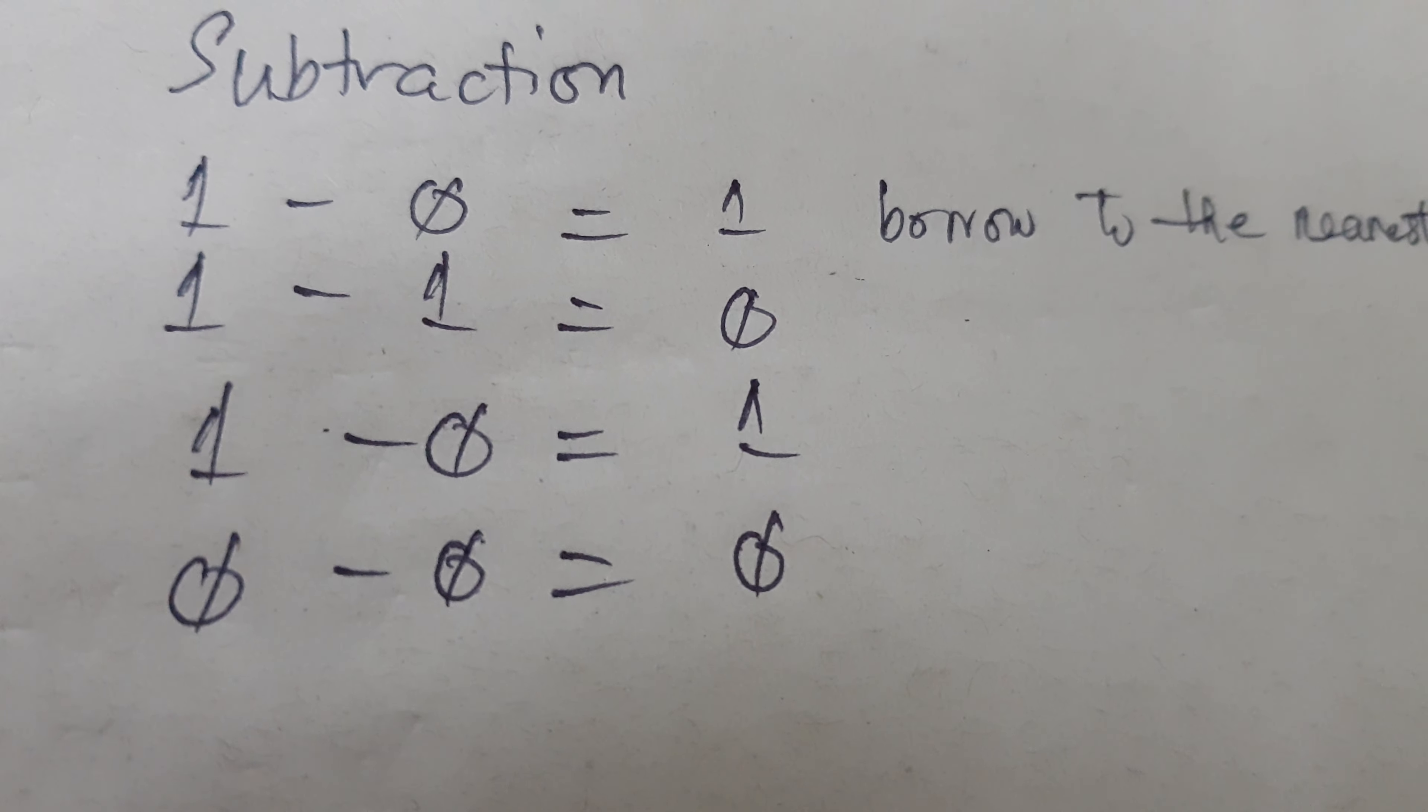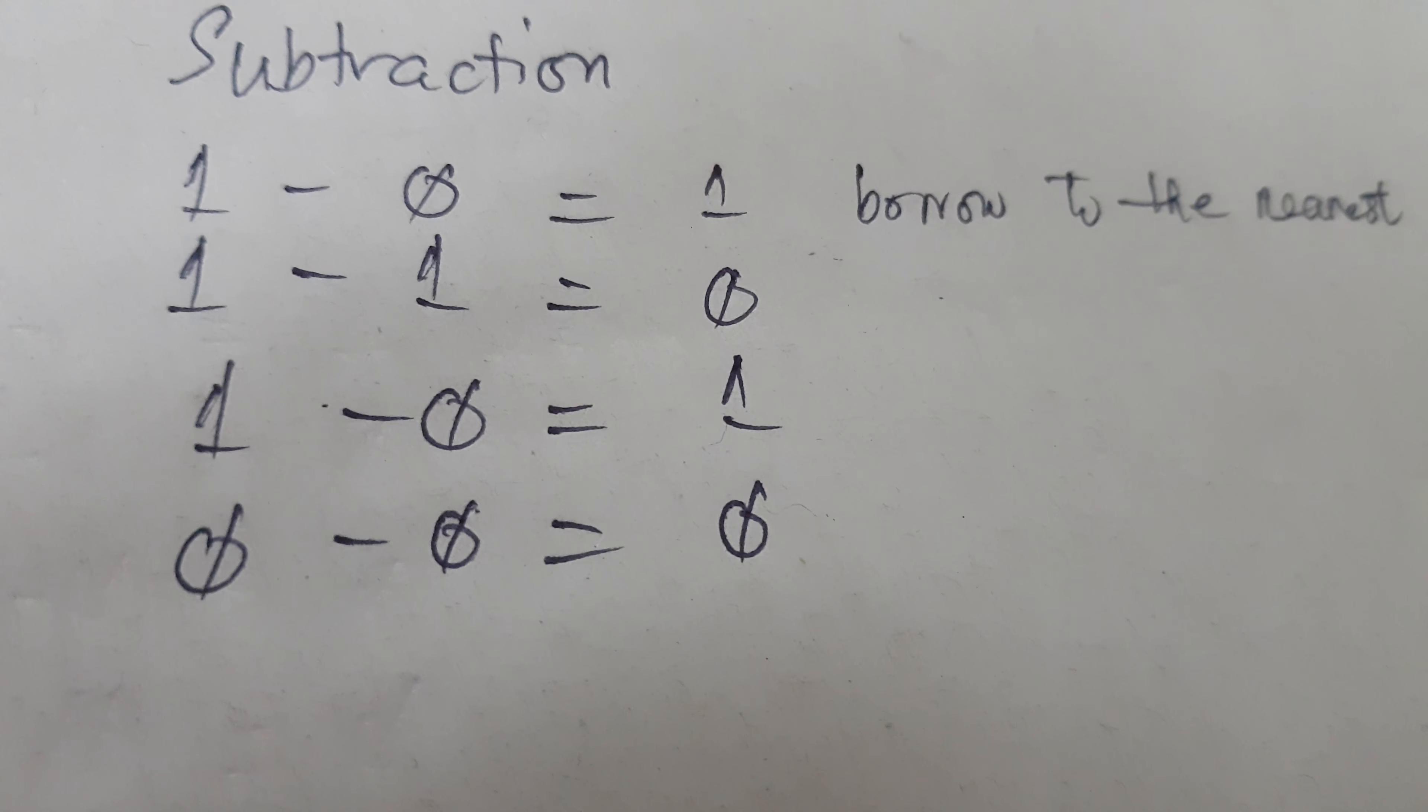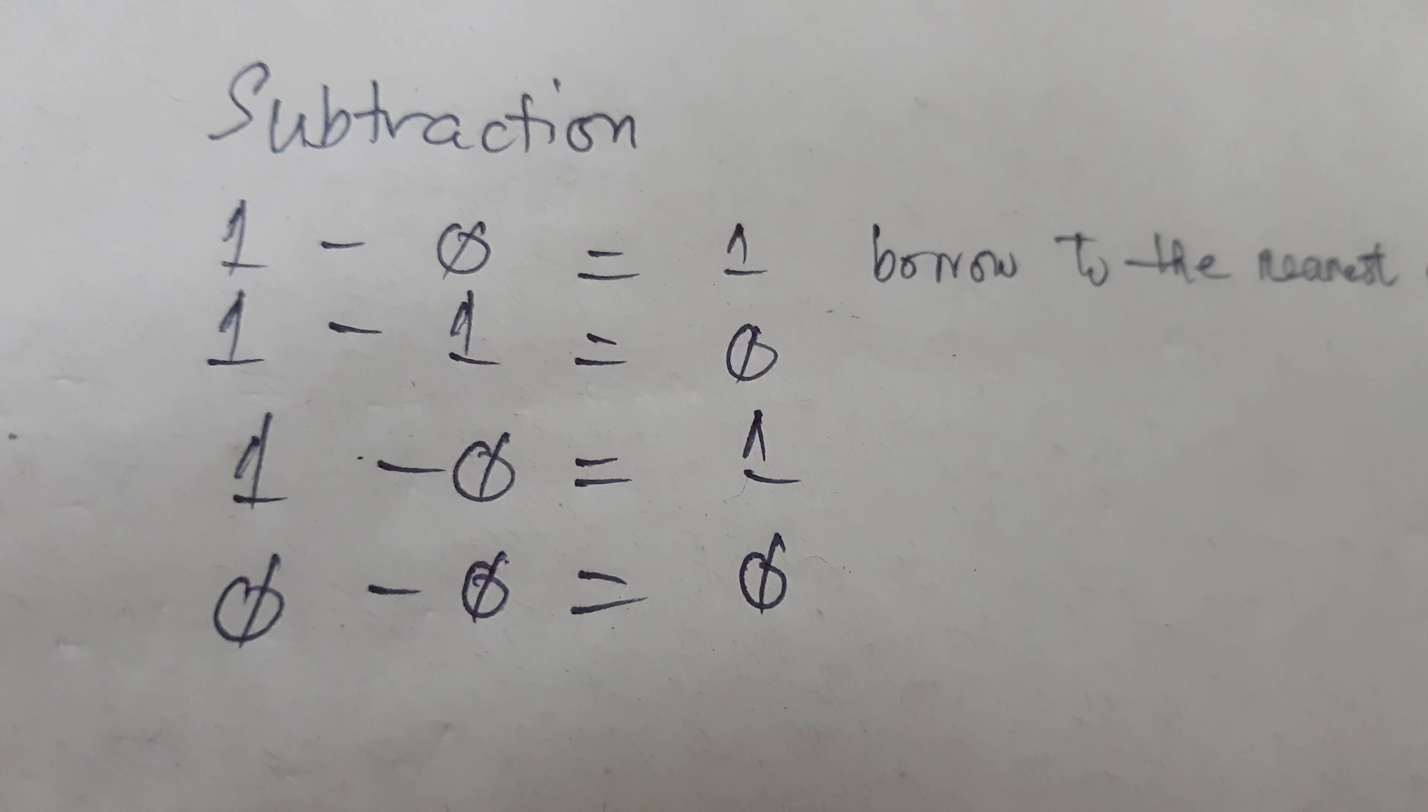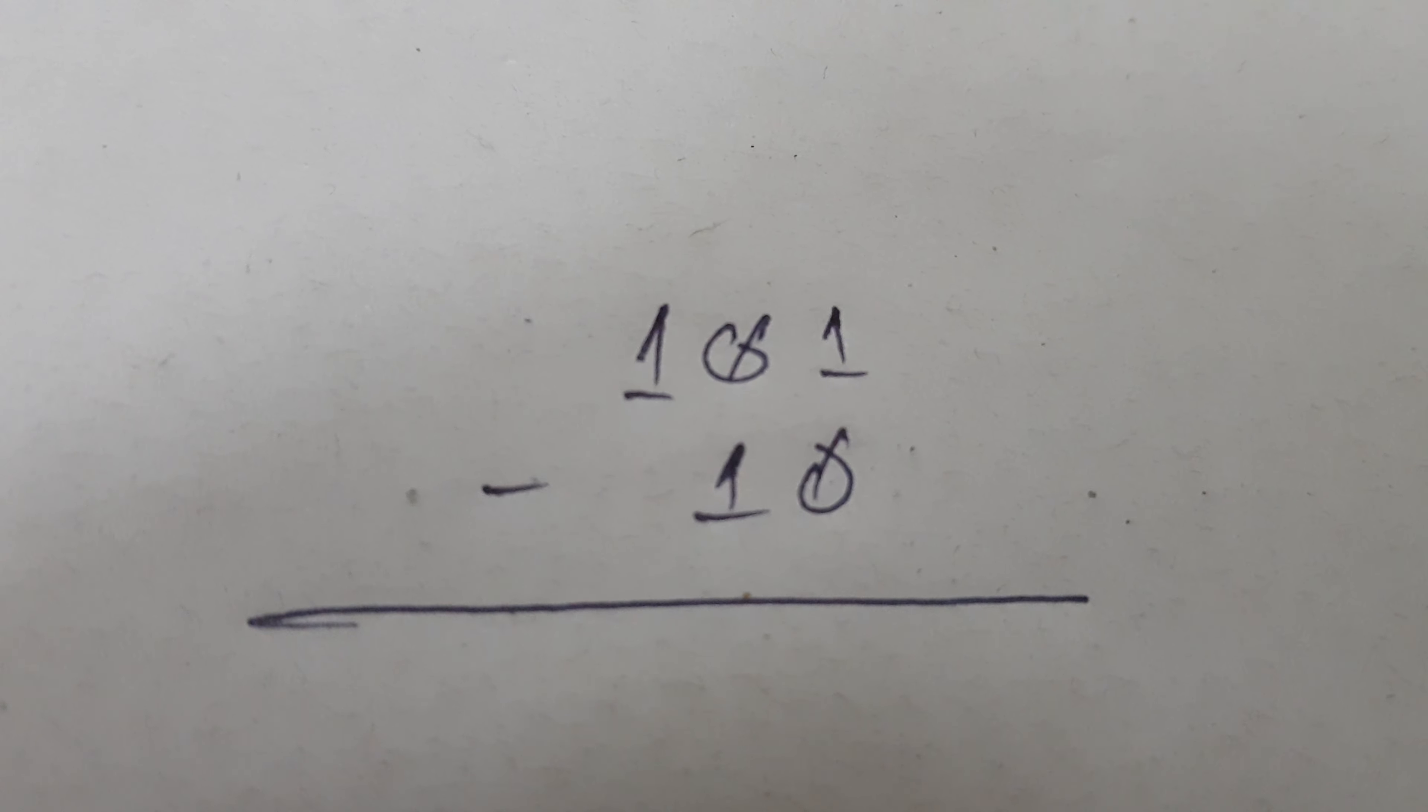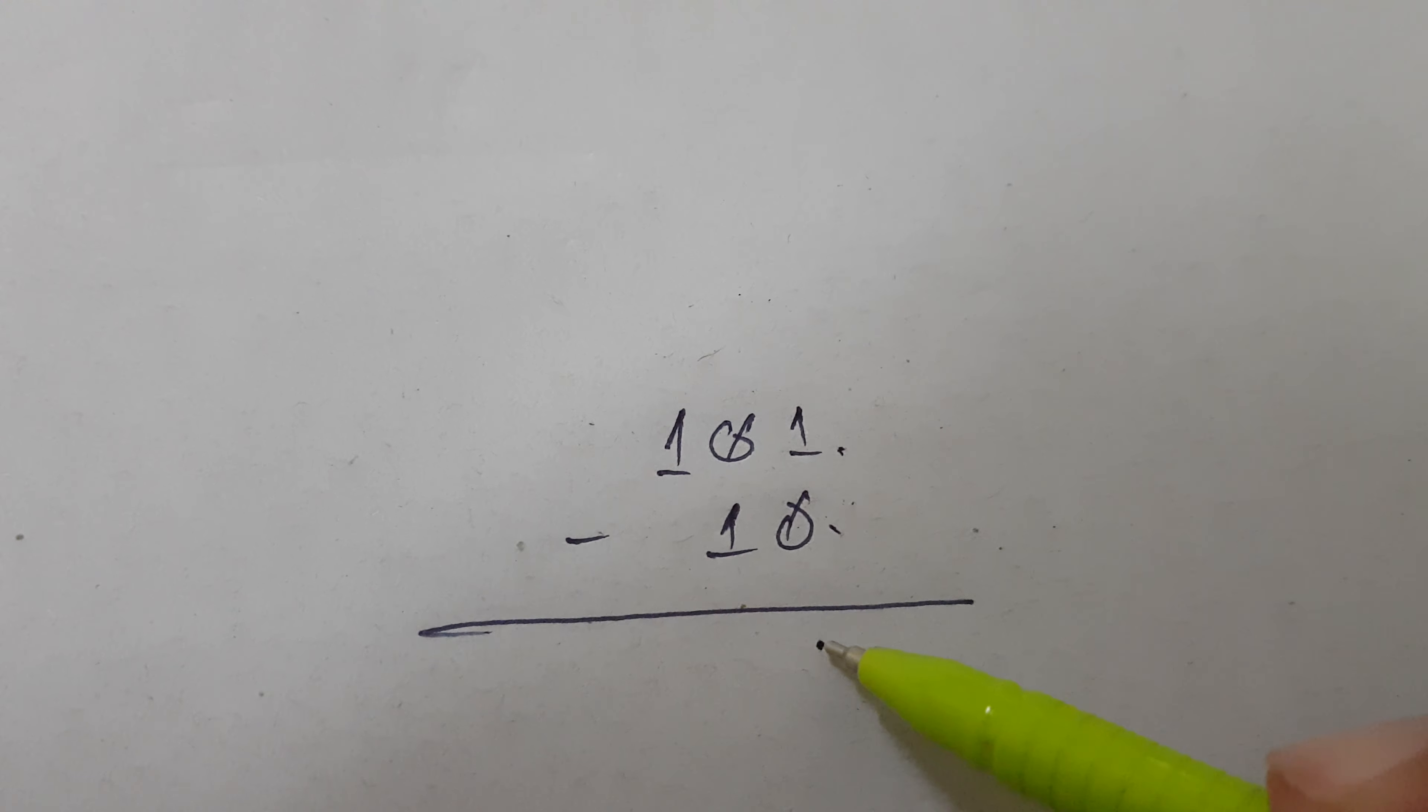Okay, let's provide an example. For instance, we have 101 and then we have 10. So we follow the rule: one minus zero equals one.